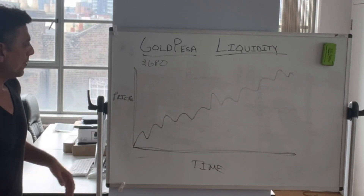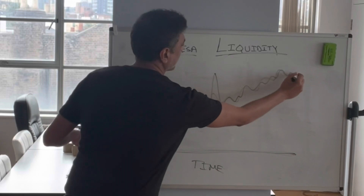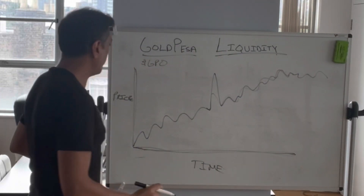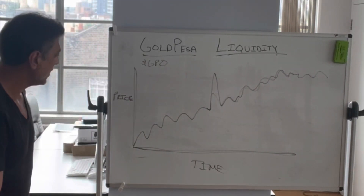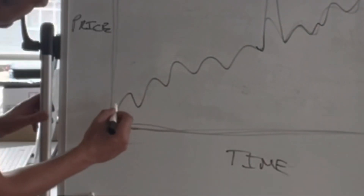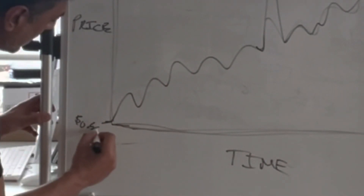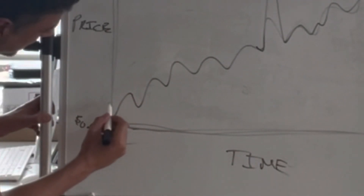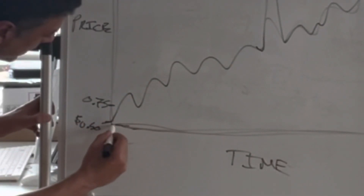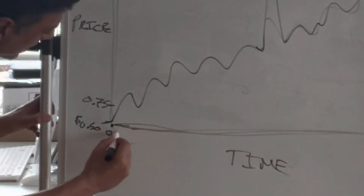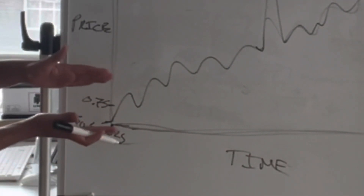So let's make this a bit clearer. This is price, this is time, this is the GPO chart we're looking at. So now we would be thinking, okay, we're starting this price here at 50 cents. And we have placed a liquidity in the range from 75 cents down to 25 cents. So the starting price and the range is engulfing the starting price.